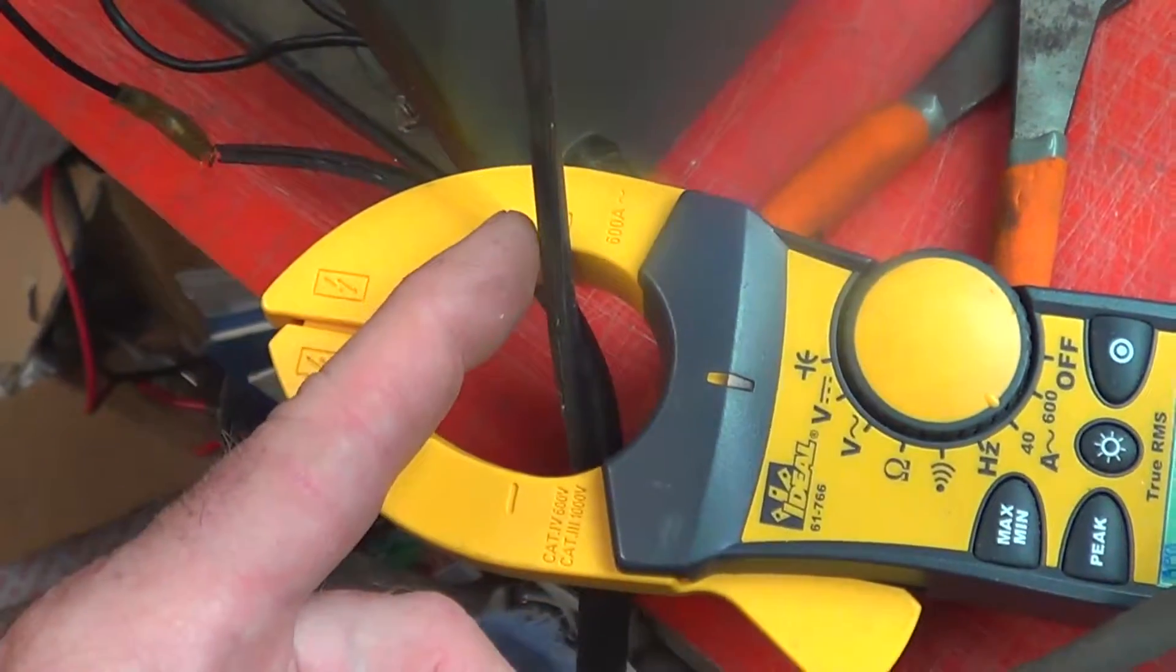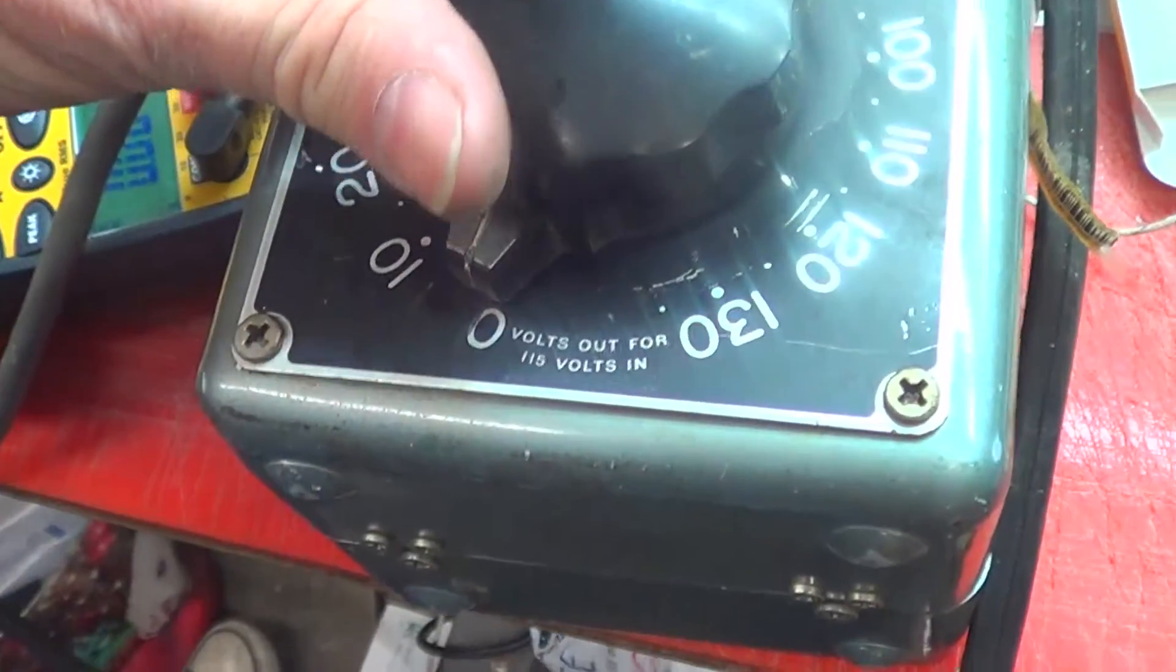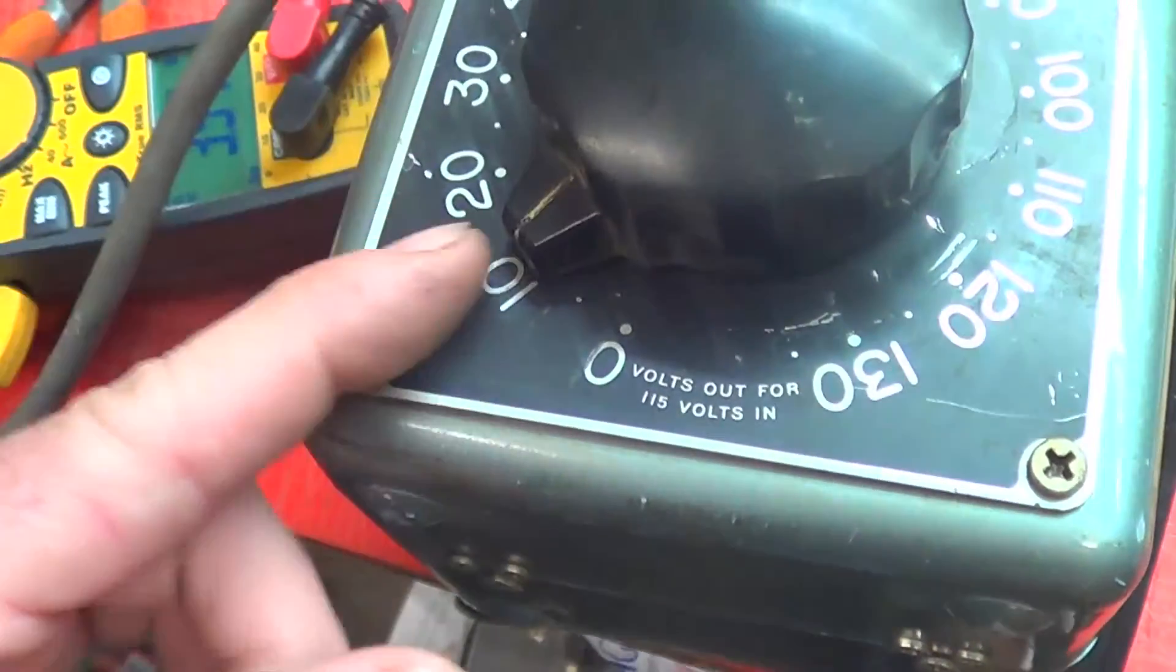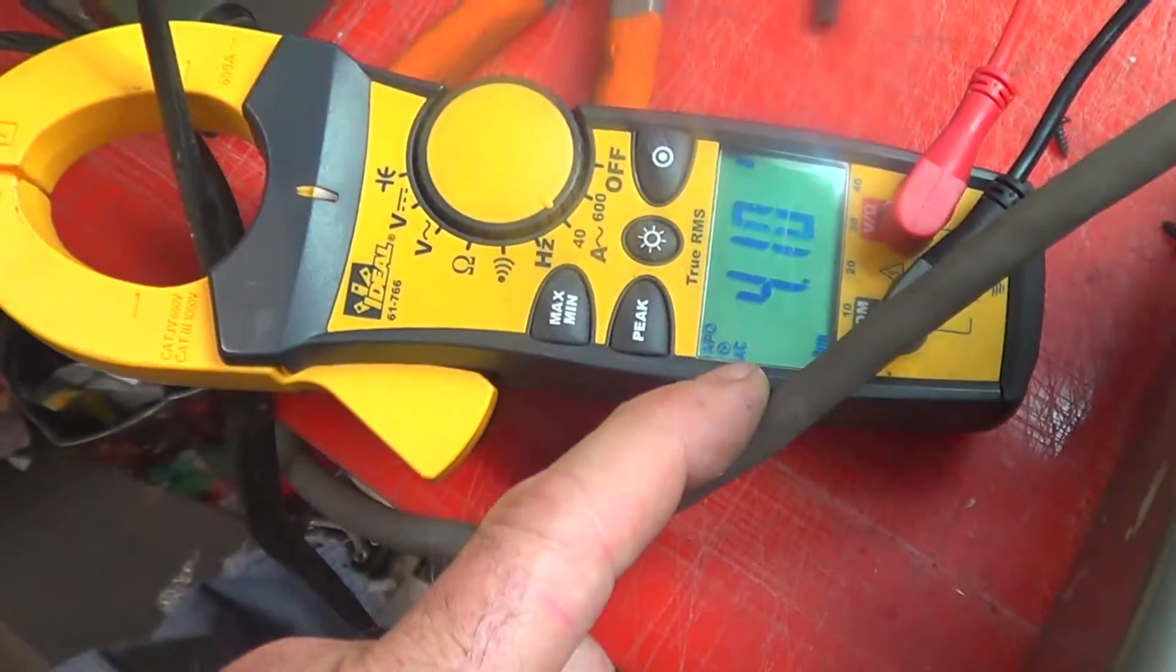I've now got the clamp on the input here, just for kicks. Turn this up to about 12 amps, 12 volts. There it is, only about 4 amps.